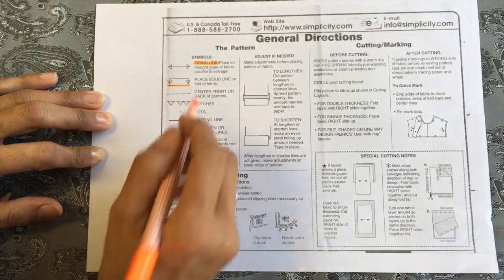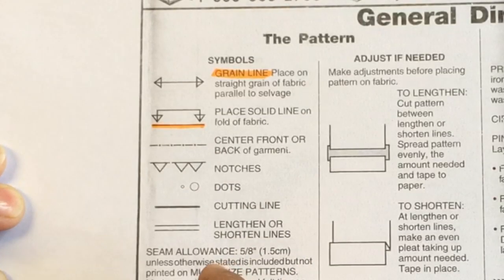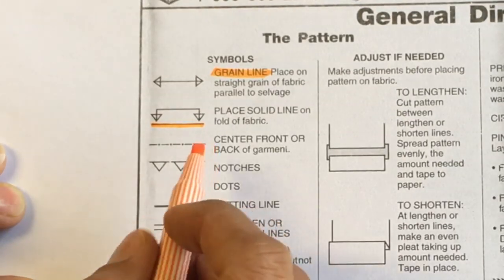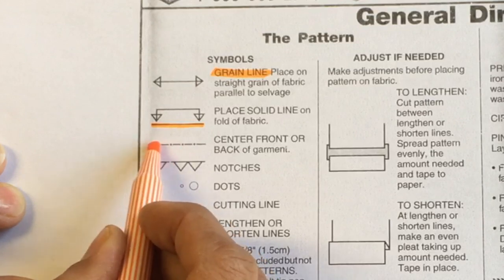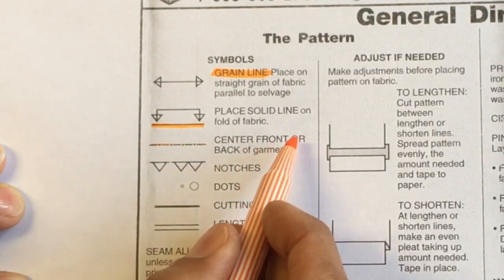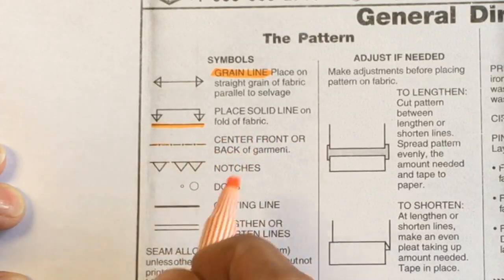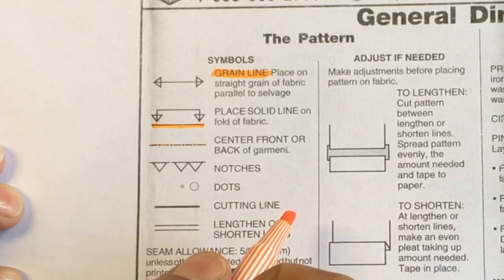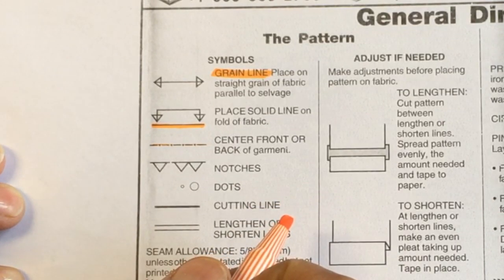This arrow here is telling us to lay the pattern piece on the edge of a fold. So this dotted line here indicates the center front or the back of the garment. That's really important to us in this project because that's going to help us work out how the buttons are going to fit on the garment.